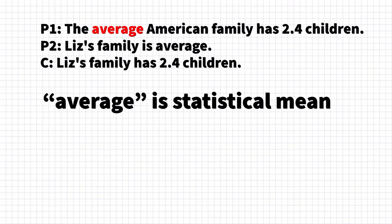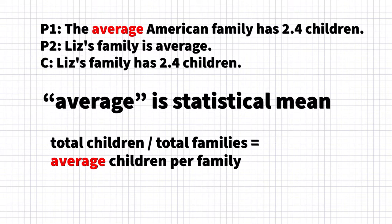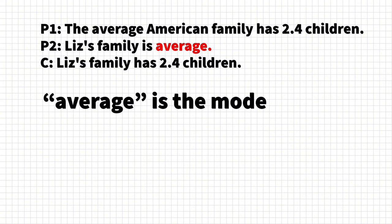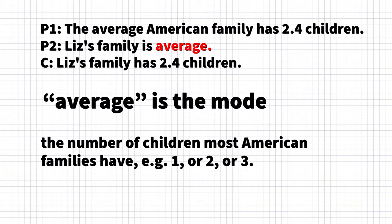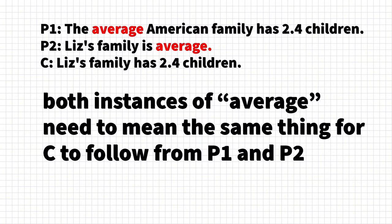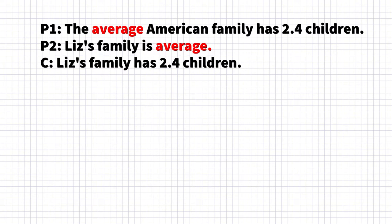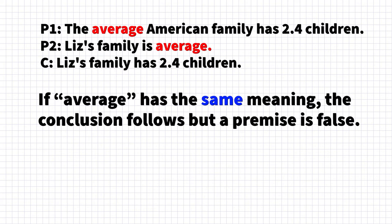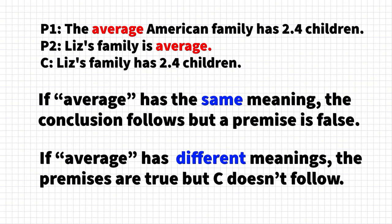In premise two, however, we take 'average' to refer to something like the notion of a mode — that is, what is the number of children that most American families have, something like two or three. For the univocality condition, the conclusion would only follow if 'average' meant the same thing in premise one and premise two. The equivocation fallacy puts you in a dilemma: you either fix the meaning of 'average,' allowing the conclusion to follow but making one premise false, or you use distinct meanings, keeping premises true but losing the conclusion.